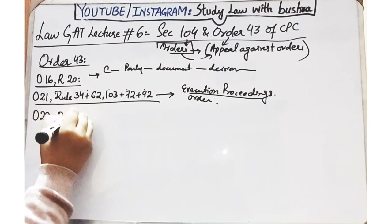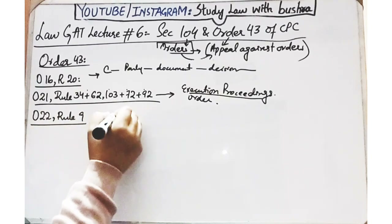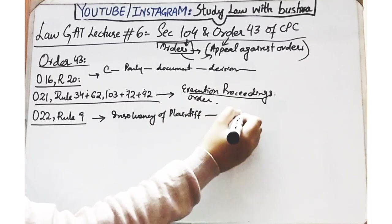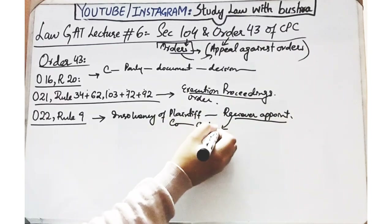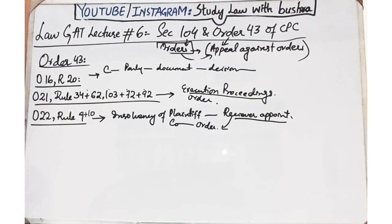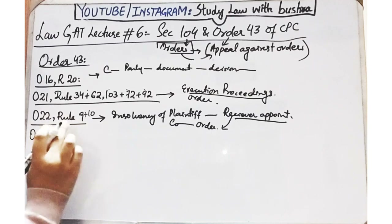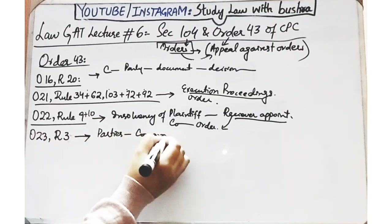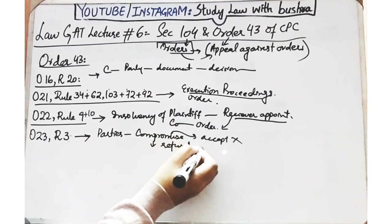Order 22 Rule 9 aur Rule 10 - Order 22 basically insolvency of plaintiff ke saath deal kar raha hai. Yani agar koi plaintiff insolvent ho gaya hai aur woh apni jagah koi receiver appoint kar raha hai, to court agar usko accept karne se refuse kar deti hai, to aisi surat mein is order ke against bhi aap appeal file kar sakte ho. Order 23 Rule 3 kehta hai ke agar kisi suit mein jab parties aapas mein kisi kism ka koi compromise kar leti hain aur us compromise ko court maanne se inkaar kar deti hai, to aise surat mein court ne jo order pass kiya, uske against bhi aap appeal file kar sakte ho.